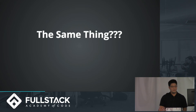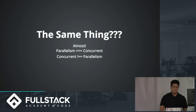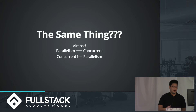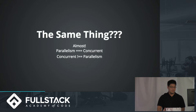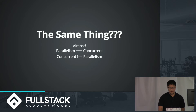So they almost sound like the same thing, and that's almost true. Parallelism is concurrency, but being concurrent doesn't mean you're parallel. Something that is single-threaded like JavaScript handles one thing at a time, but it can't do them simultaneously, which is what parallelism is all about.